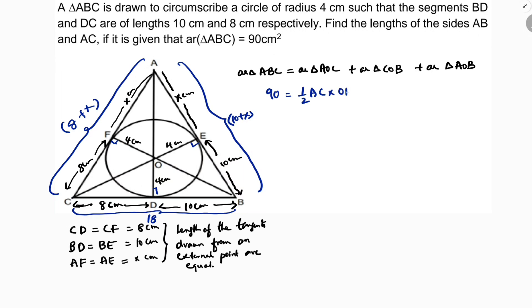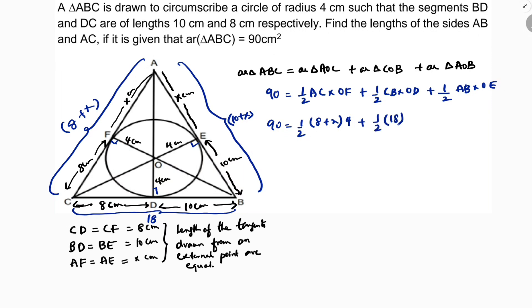Substituting into the area equation: 90 equals half times (8 plus X) times 4, plus half times 18 times 4, plus half times (10 plus X) times 4.